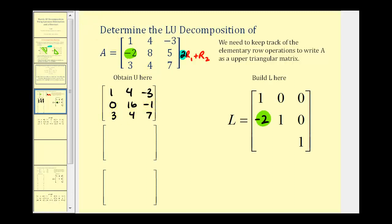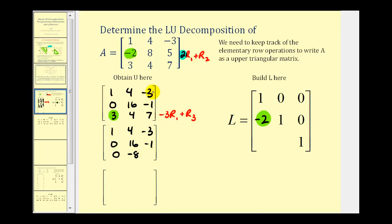Now that we have this matrix, let's obtain a zero in the row three, column one position. We want to add a multiple of another row to row three to obtain a zero there. Let's replace row three with negative three times row one plus row three. The first two rows stay the same. For the third row: negative three times one plus three is zero; negative three times four is negative twelve plus four, that's negative eight; and negative three times negative three is positive nine plus seven, that's sixteen. Our multiplier was negative three, which helped us obtain a zero in row three, column one. In our lower triangular matrix at row three, column one, the opposite of negative three is positive three, so this element is positive three.